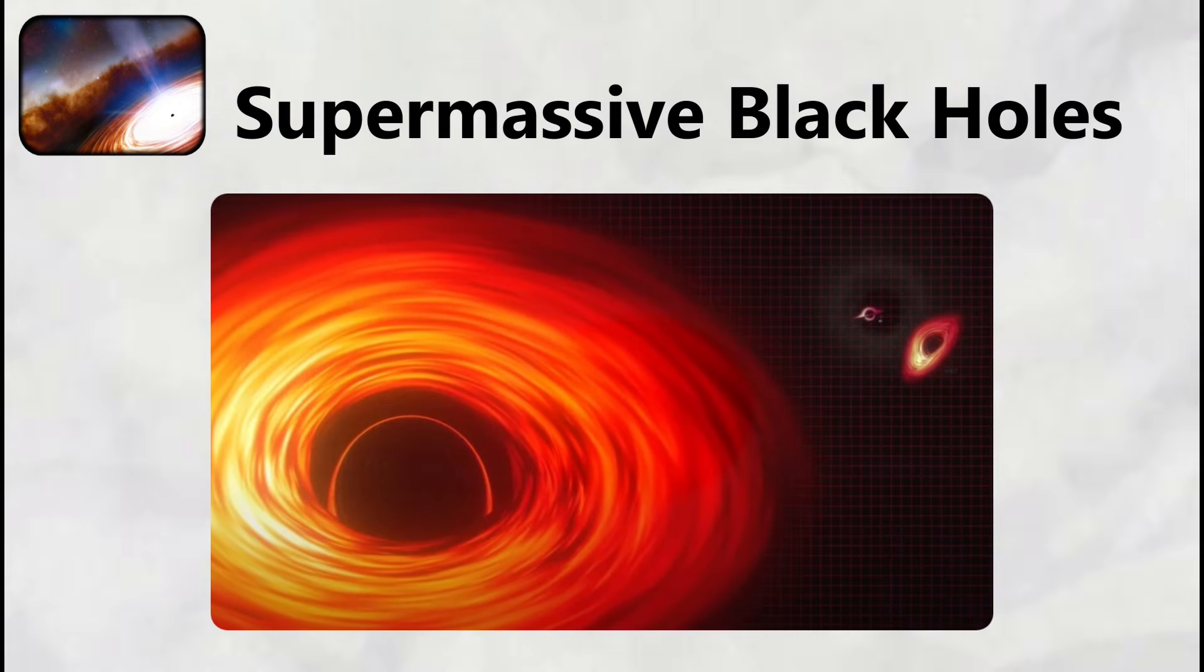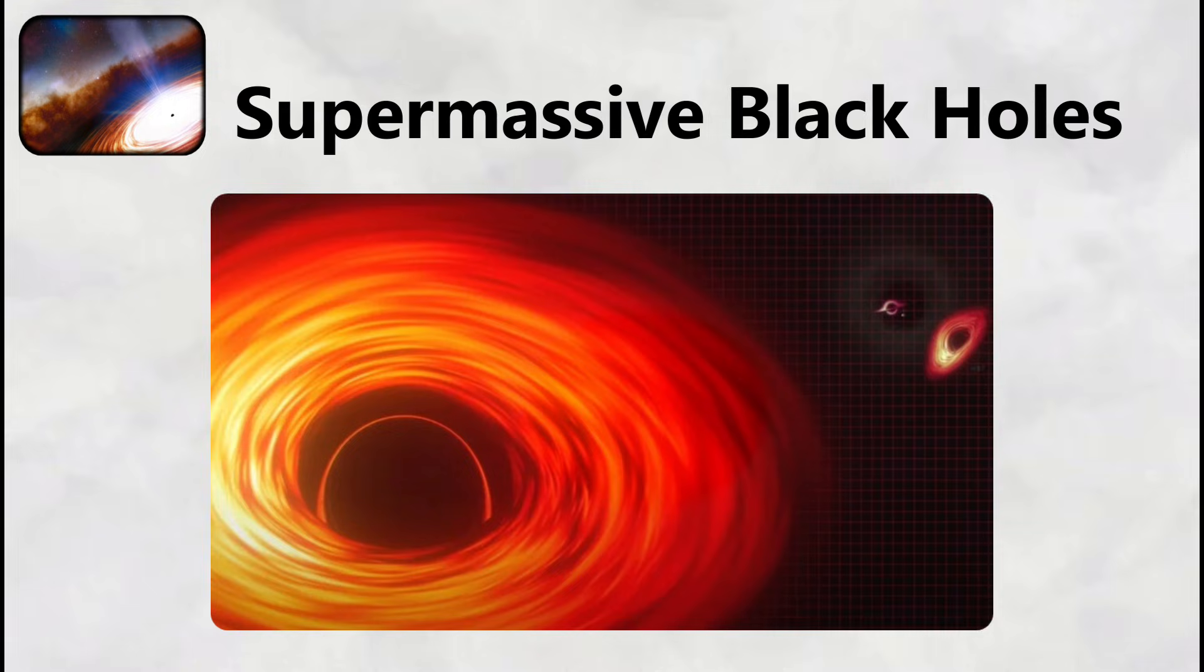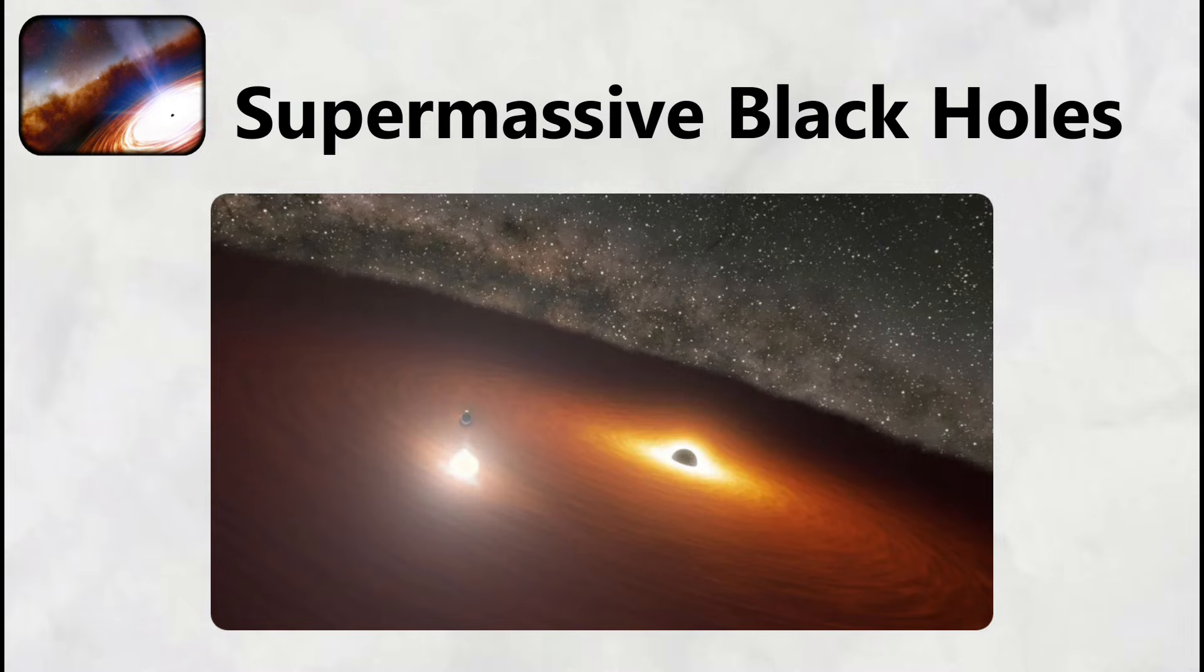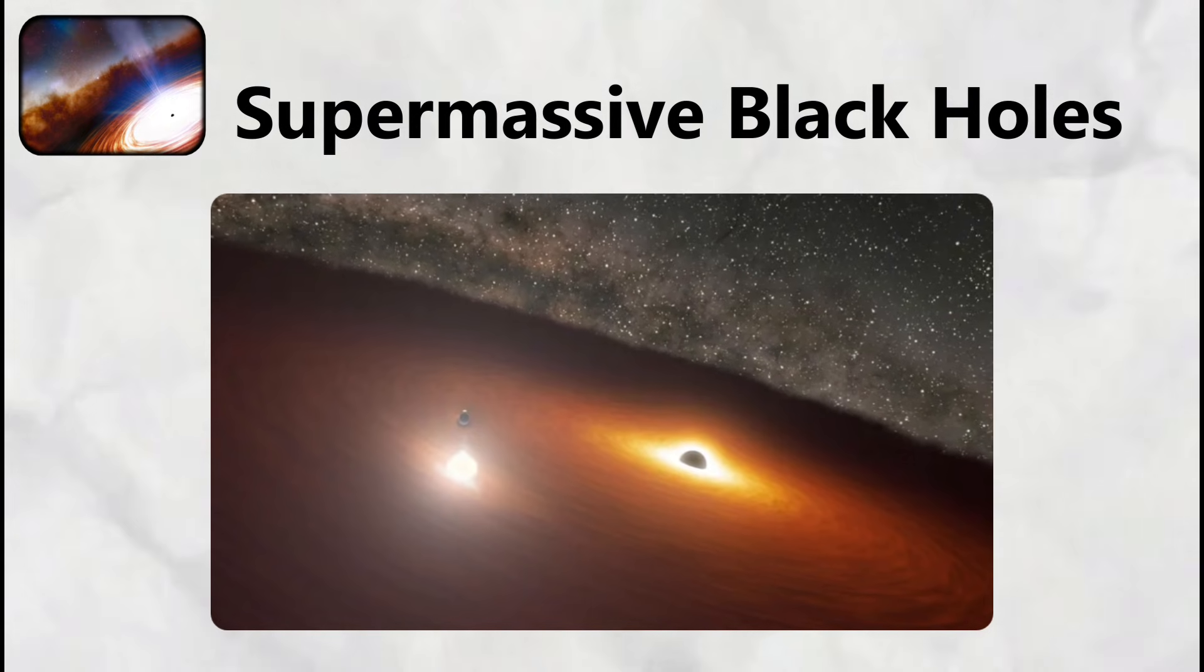The black hole's event horizon, the point of no return, extends approximately 12 million kilometers from its center, creating a spherical region where space and time become so distorted that nothing, not even light, can escape once it crosses this boundary.